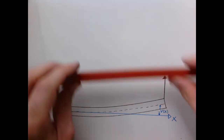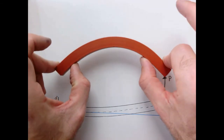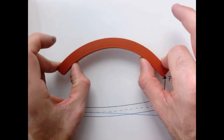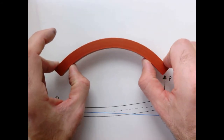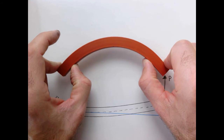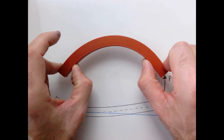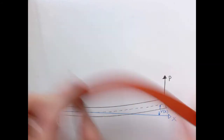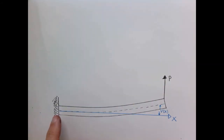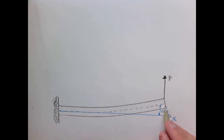When we studied a beam applied to a pure moment, we applied a twist at the end. Since the moment is constant along the axis, the bar curved into a perfect circle and all we needed was its radius. On this cantilever beam, the moment is maximum at the wall and zero where the point load is applied, so it varies along the distance. We're going to break this up effectively into a bunch of little circles.